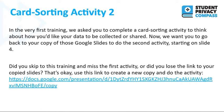So now you're going to do an activity. We're going back to the activity that you did in the very first training, where we asked you to sort some virtual cards about how you'd like your data to be collected or shared. Now we want you to go back to your copy of those Google Slides to do the second activity starting on slide four. Did you skip to this training and miss the first activity, or did you lose the link to your copied slides? That's fine. You can use the link in the PowerPoint or in the comments to this video to create a new copy and do the activity. You can also directly download the activity if you'd prefer not to do it in Google Slides.